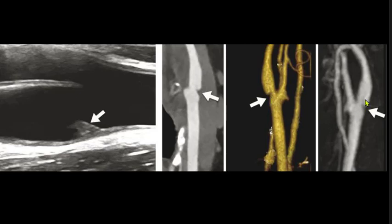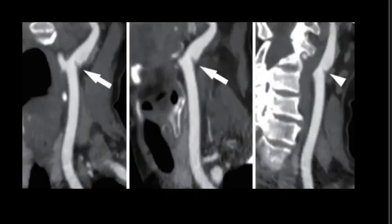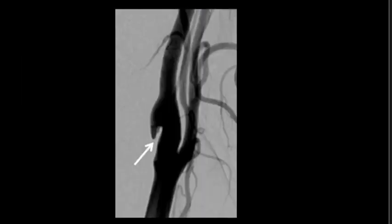Similar changes can also be seen on this MR angio of the carotids. This is another example of CT angio of the carotid. We can see in all 3 images there is a shelf-like web in the proximal most portion of the internal carotid artery. Here we have an example of a conventional carotid angiogram, where we can see a shelf-like projection in the proximal portion of the internal carotid artery.